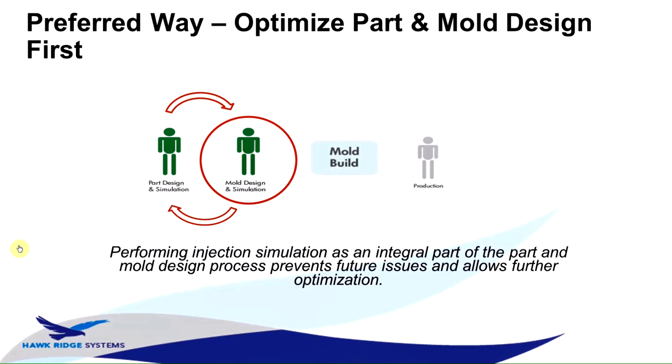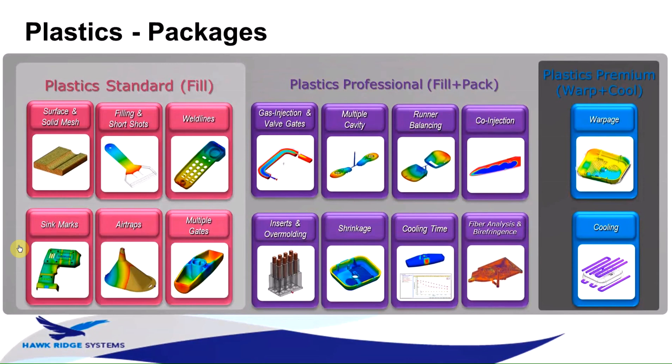SOLIDWORKS Plastics is available in three packages: Plastics Standard, Plastics Professional, and Premium. Standard allows you to evaluate defects that occur during the filling phase of the injection molding process. Professional adds the packing phase, allowing you to control the shrinkage and final form of the part, as well as unique molding technologies like co-injection or insert over molding.